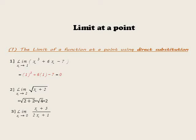0 plus 3 over 2 times 0 plus 1 equals 3 over 1 equals 3. Another example: limit as x approaches 2 of (2x plus 2) over (3x). By substituting x equals 2: 2 plus 2 over 3 times 2 equals 4 over 6.